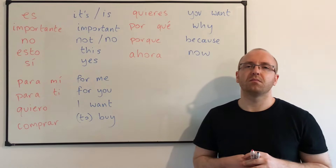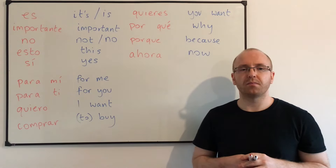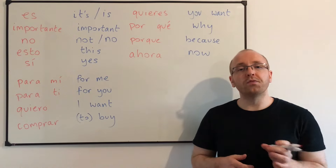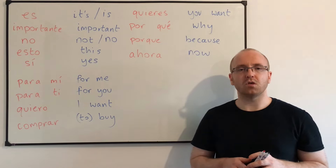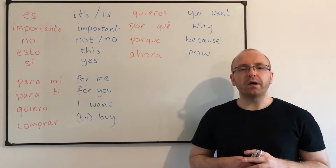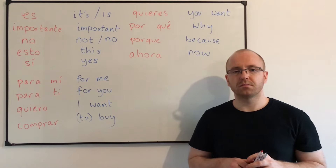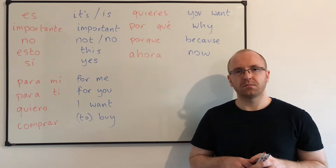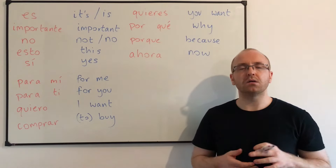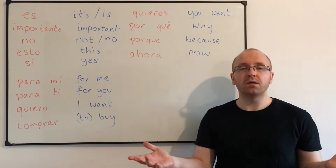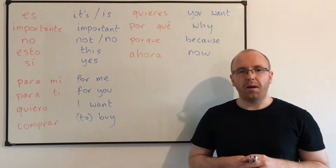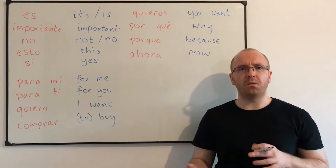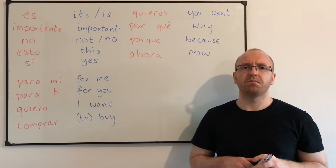So, I want to buy this now: quiero comprar esto ahora. Good. I want to buy this for me now: quiero comprar esto para mí ahora. Good. You can hear that R sound in 'quiero,' 'para,' 'ahora' — ara, ara. Good pronunciation. How would you say 'it's important now'? Es importante ahora. Good. Because it's important now: porque es importante ahora.